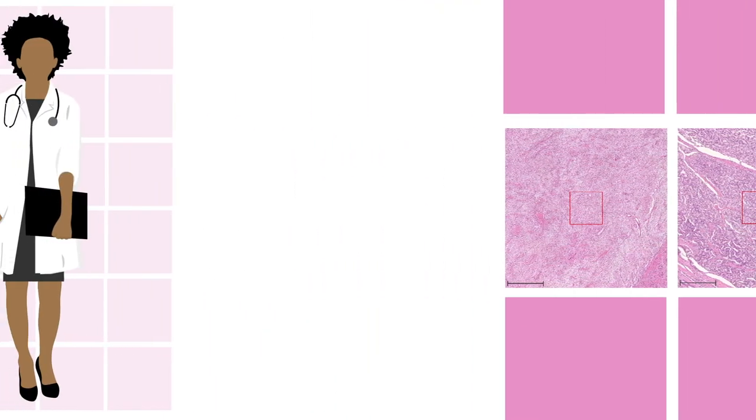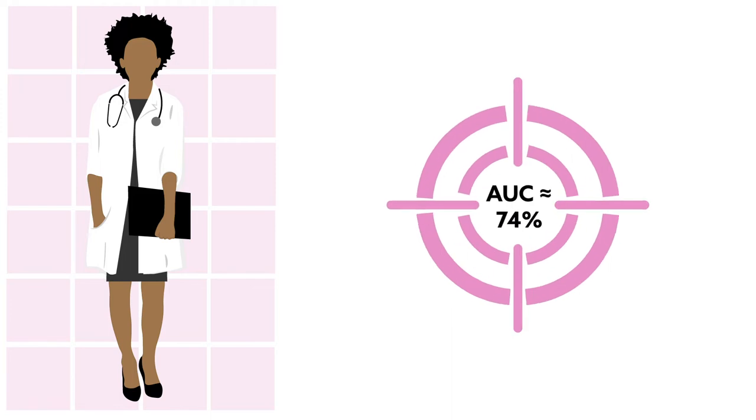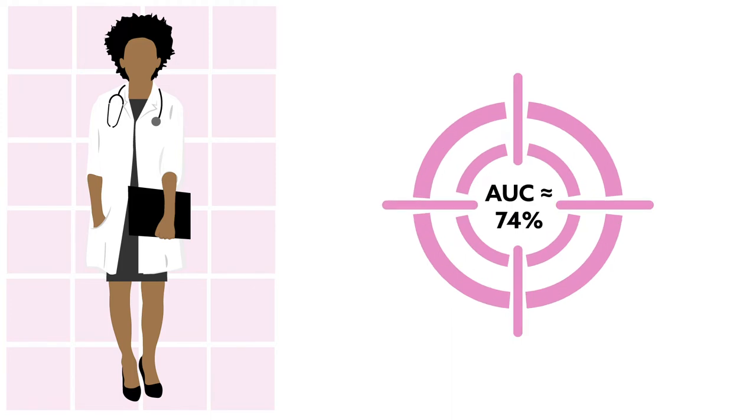On those images, human pathologists received an accuracy known as AUC, Area Under the Curve score, of about 74%.